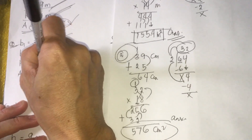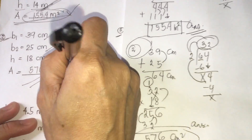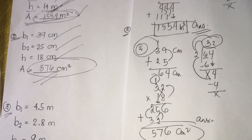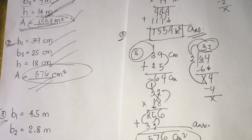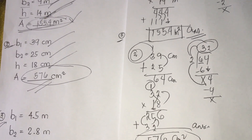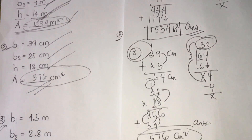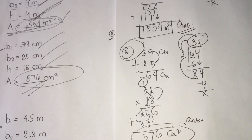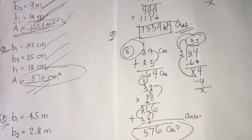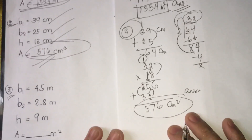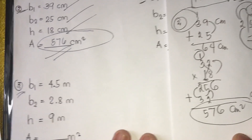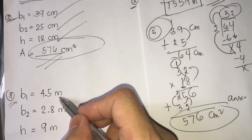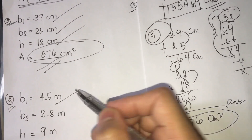So our answer for number two is 576 centimeters squared. That's the area for number two. Hope you can follow — those are sample ways on how to find the area of trapezoids.